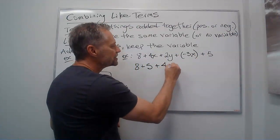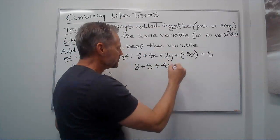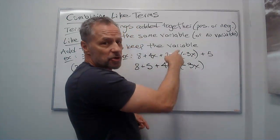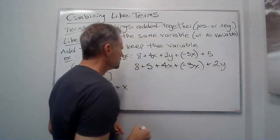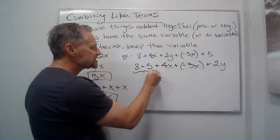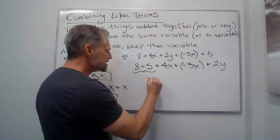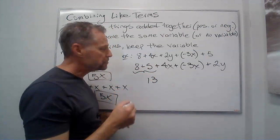The 4x I can put together with the plus negative 3x, and then the 2y, there's no other y's in there so I'm just going to leave the 2y by itself. And so I just add these together. 8 plus 5, again they're the same sign, I add them together. 8, 13. Keep the sign, the positive.